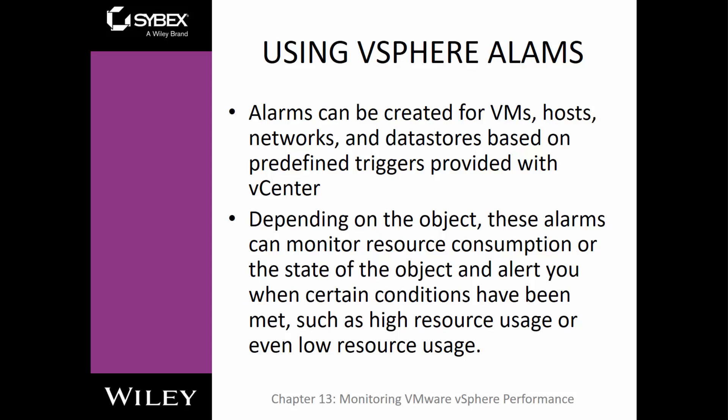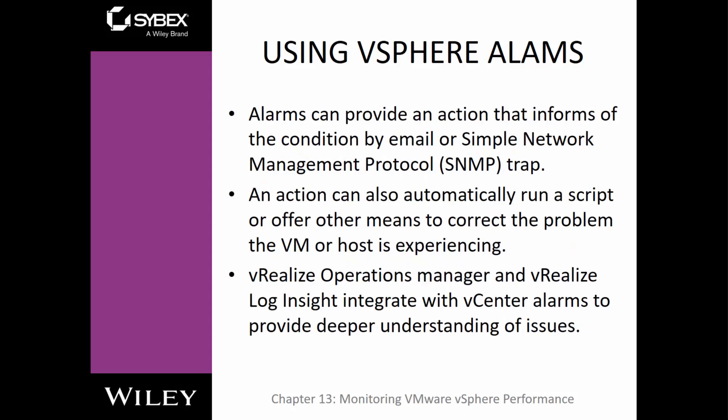Such as high or low resource usage, that will alert you either via an alarm or via an alarm in an email — just depends on how you have it set up. You can also use SNMP traps to monitor and track vSphere. An action can also happen automatically based off of certain criteria; you can have it run scripts. If a VM is running a certain criteria and that criteria is met, you can have it run a particular script.